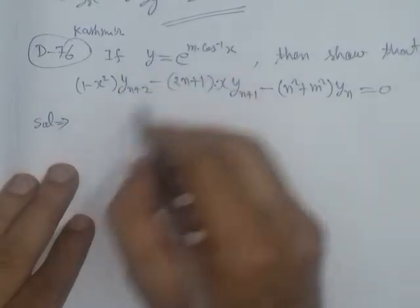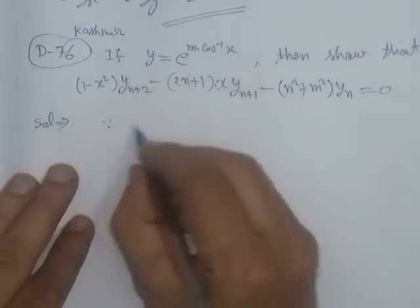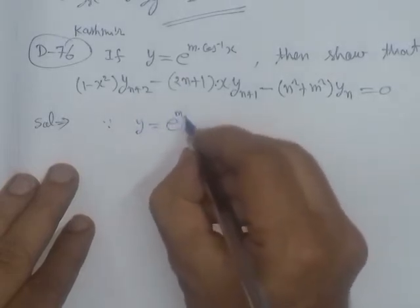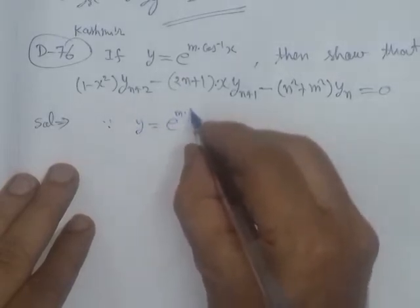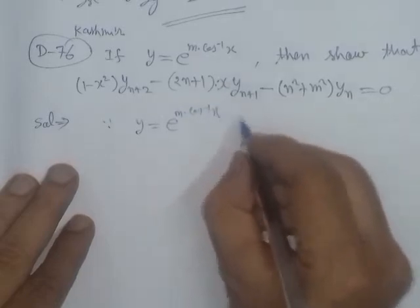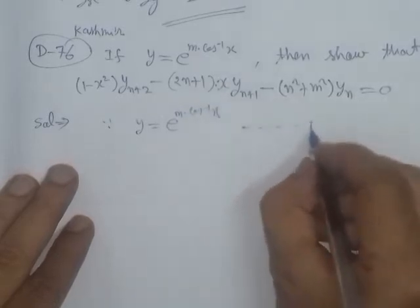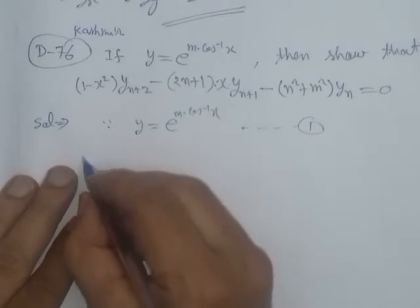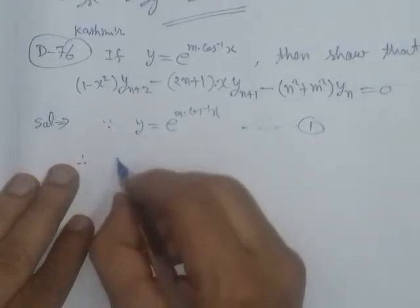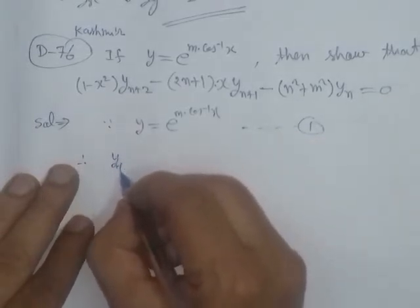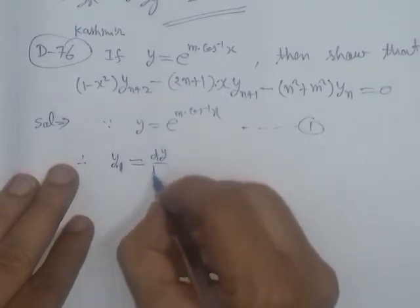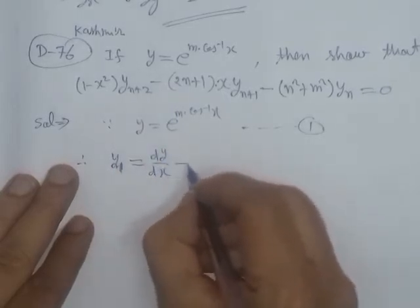The given value is y = e to the power m times cos inverse x. We call this equation number 1. To prove the required result, we first need to differentiate once. We write y₁, which means the first differentiation of y with respect to x.